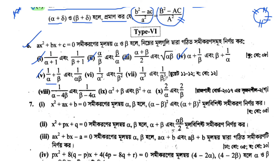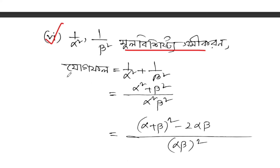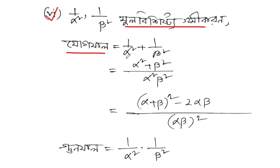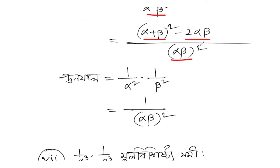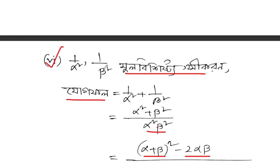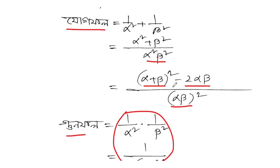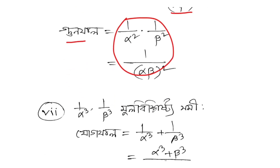The next problem is 1 by alpha squared plus 1 by beta squared. The sum of roots: 1 by alpha squared plus 1 by beta squared equals alpha squared plus beta squared over (alpha beta) squared. Now alpha squared plus beta squared equals (alpha plus beta) whole squared minus 2 alpha beta. So substituting alpha plus beta equals minus b by a and alpha beta equals c by a.